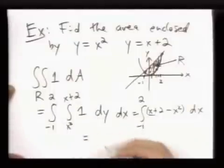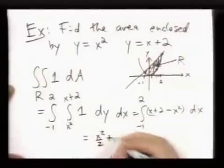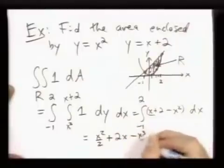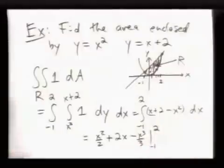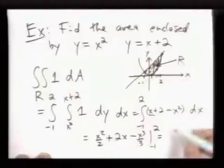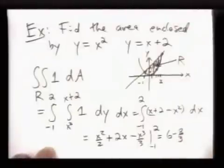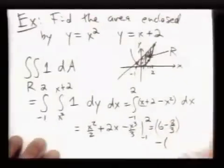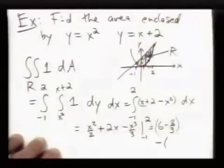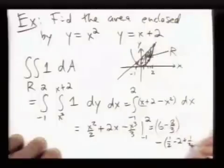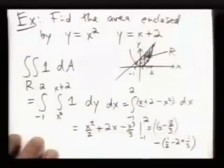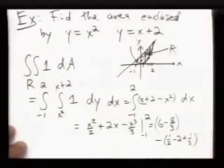And if you go through this, what do you get? You get x squared over 2 plus 2x minus x cubed over 3 from negative 1 to 2, which is 6 minus 8 thirds minus, which is this. And, well, I won't simplify that here. You get some number.